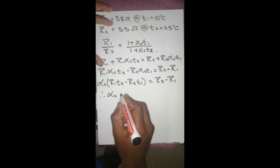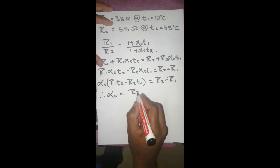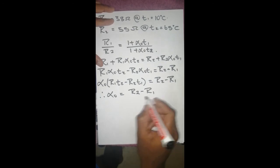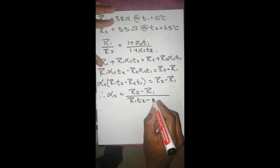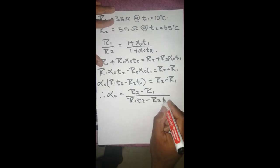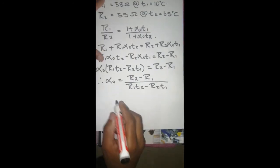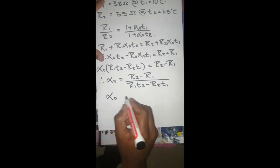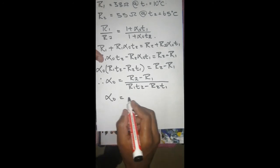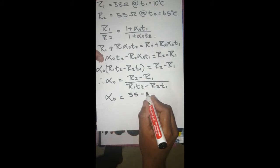And plugging in what we have, it's going to be R2 which is 55 minus R1 which is 38.